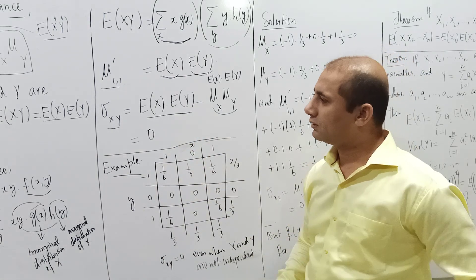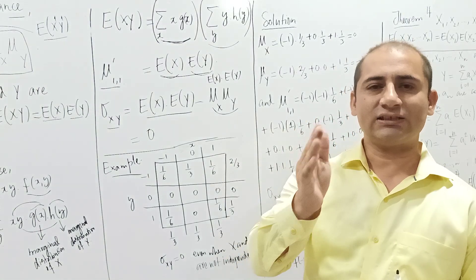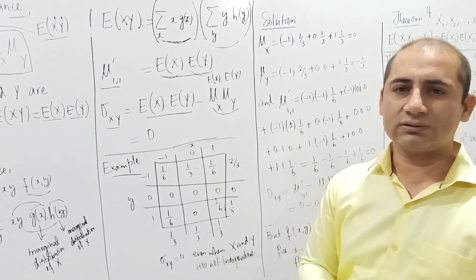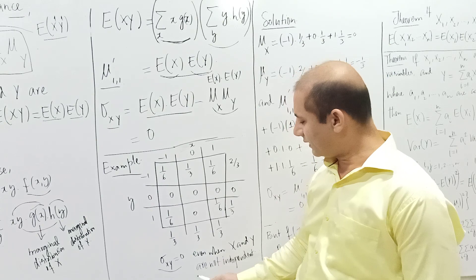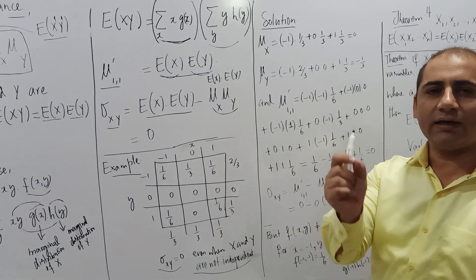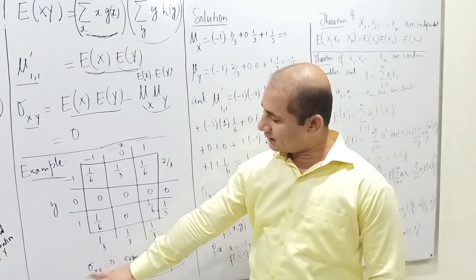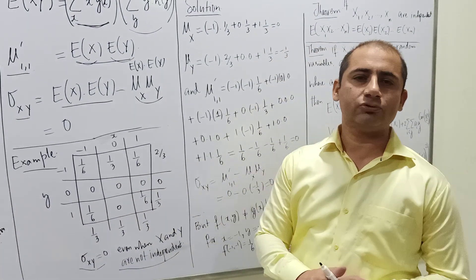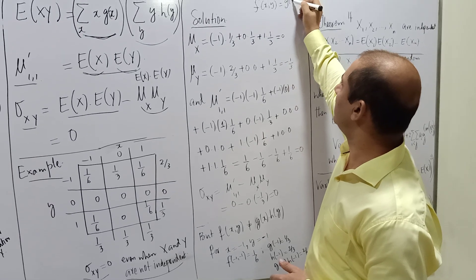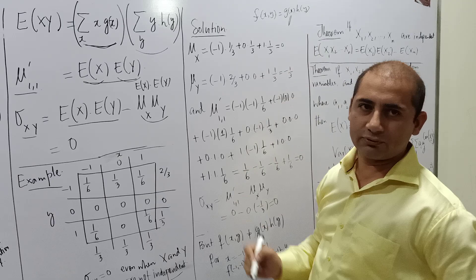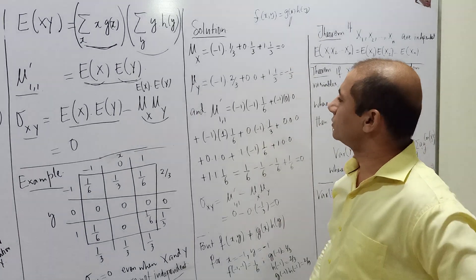Now we do an example where the covariance is zero, yet X and Y are not independent. To show independence, we must verify that F(x,y) = G(x)·H(y) for all values. To compute the covariance sigma_XY, we use the formula involving mu_11_dash and the marginal means.